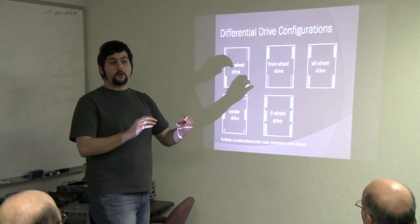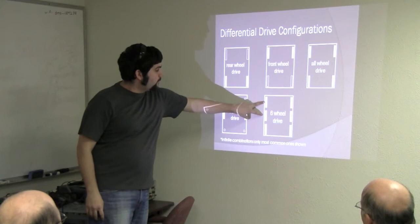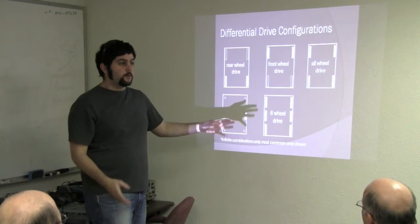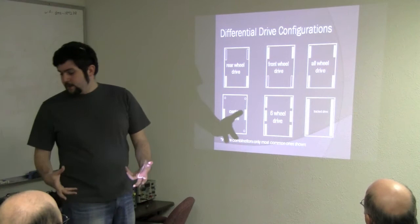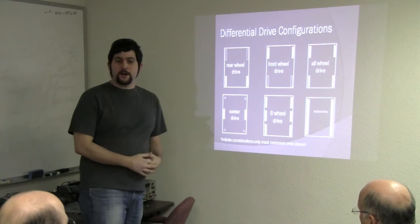The other one that goes along the same as the center drive is the six-wheel drive where all the wheels are powered. Most times in the six-wheel drive, the center wheel is lowered by about an eighth of an inch. This essentially when you're turning creates your effective wheelbase will only be a set span, but you'll still be turning about the center of your robot, so that helps with traction. I've got some slides about traction in here too.